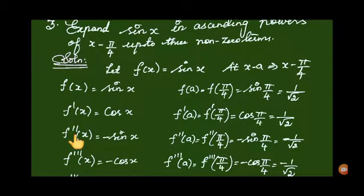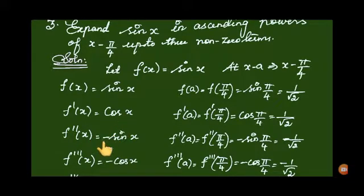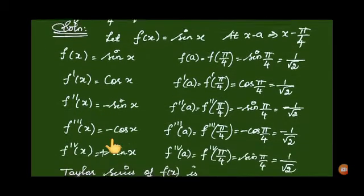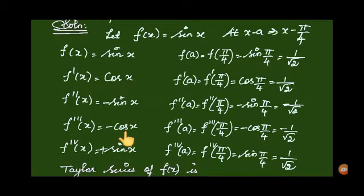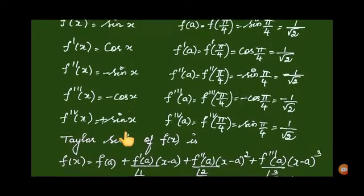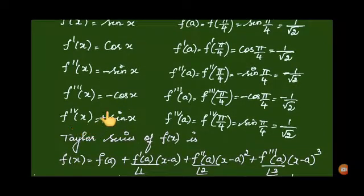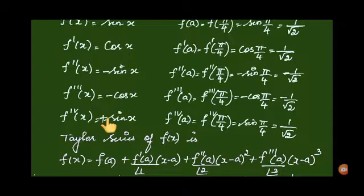Again differentiating, f double dash of x: differentiating cos x gives minus sin x. For f triple dash of x, differentiating minus sin x gives minus cos x, keeping the negative. The fourth derivative: differentiating minus cos x gives plus sin x, since the two negatives multiply to give a positive.